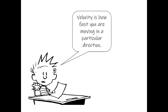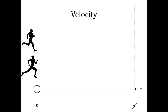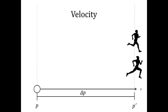Our next kinematic variable is going to be velocity. Velocity is how fast you are moving, but not only how fast — also how fast you're moving in a particular direction. Let's take two runners: a man on top and a woman on the bottom doing a 100-meter race. We'll put the origin at the start line, with the direction going toward the finish line. The displacement is 100 meters. They race — and she went much faster than he did, arriving at her final location before he did.